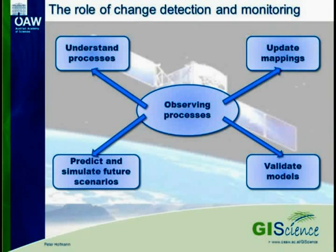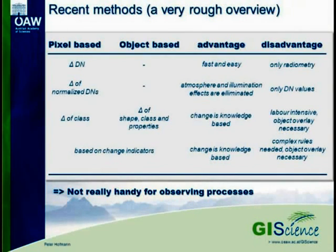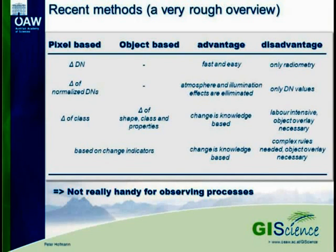We are more or less doing the same methods and technology. Here is a brief overview of the methods we use for change detection, put into pixel-based and object-based categories with advantages and disadvantages. The very simple one is just doing a delta of the DN values per image — very simple, fast, and easy — but it only looks at the radiometry, so you get a lot of changes which are not really changes. You get a kind of salt-and-pepper effect.